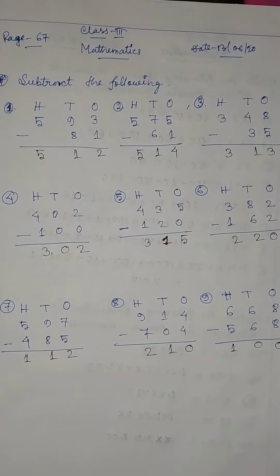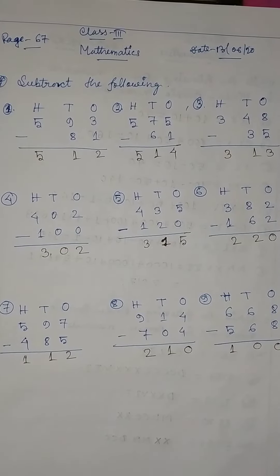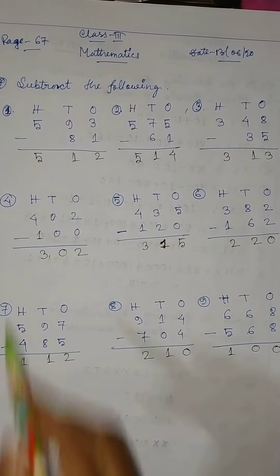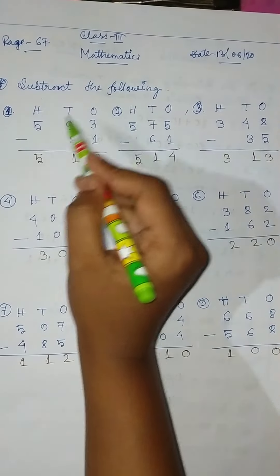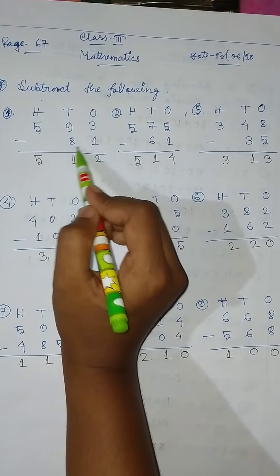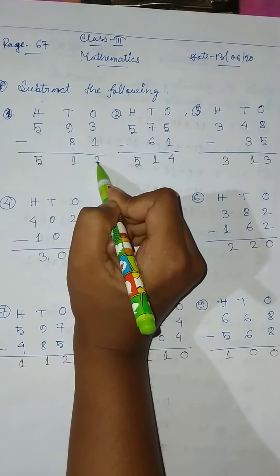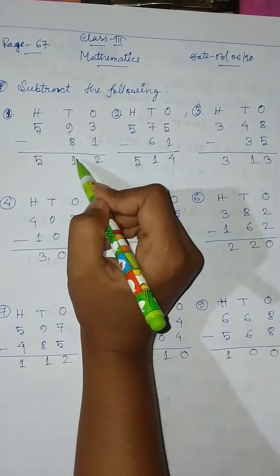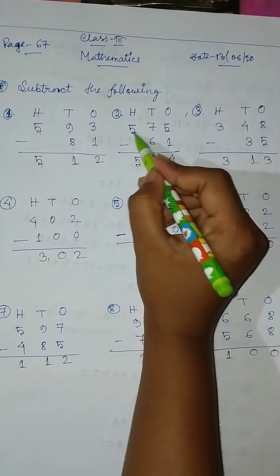Hello students, good morning. Class 3 mathematics, 13th June 2020, page 67 — subtract the following. Okay, so 593 minus 81: 3 minus 1 equal to 2, 9 minus 8 equal to 1, and then 5. Answer: 512.